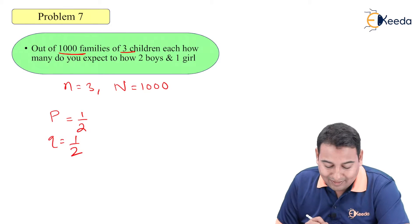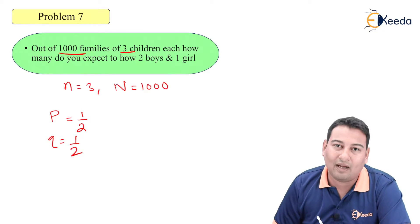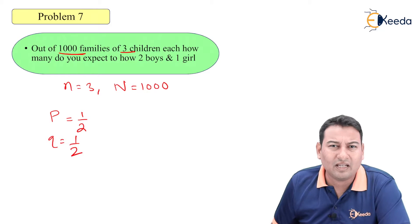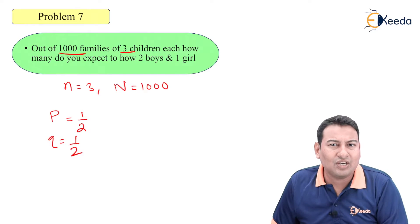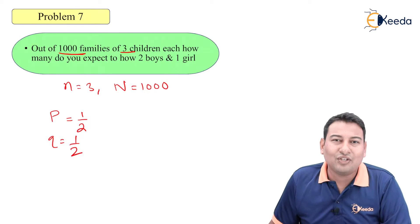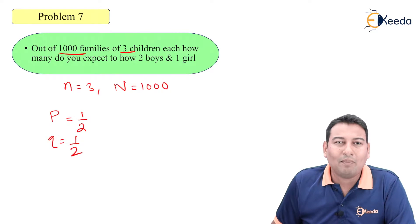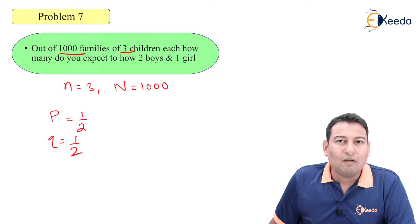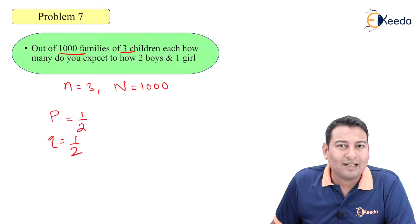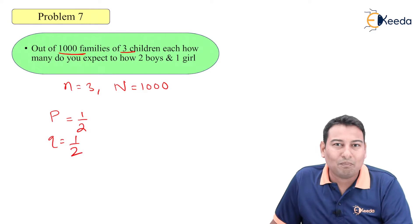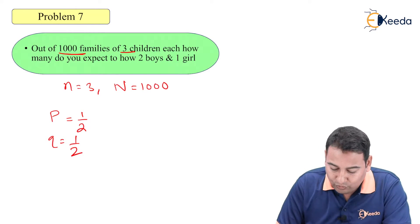So whichever you consider as success, P will be half, Q will be half. Now, you might be thinking, each family has 3 children and there are 1000 families. Still, probability of boy is half. Friends, always remember, in case of binomial distribution, P and Q that you calculate